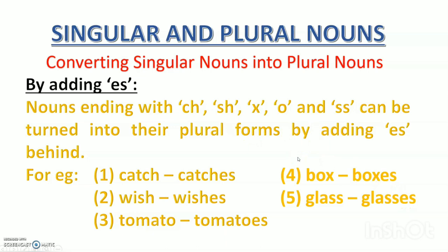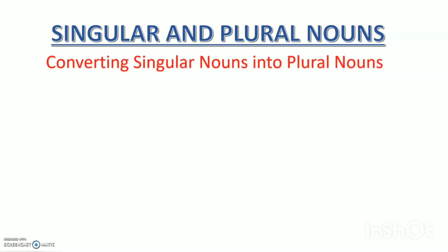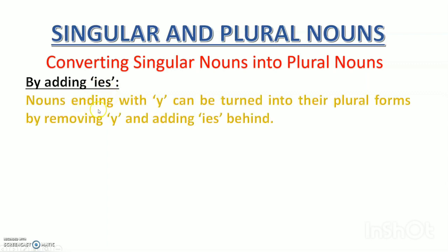Let's move to the next way of converting singular nouns into plural nouns — that is by adding IES. Nouns ending with Y can be turned into their plural forms by removing Y and adding IES behind. Wo nouns jinke peeche Y ho, unhe plural form mein badalne ke liye Y nikal kar IES lagaate hain.